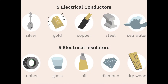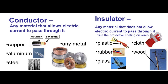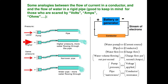In some materials such as glass, rubber, wood and most plastics, the electrons are held quite tightly and are not free to move easily from place to place. These materials are called insulators. In other materials such as copper, silver, gold and iron, electrons are free to move from place to place. These materials are called conductors.